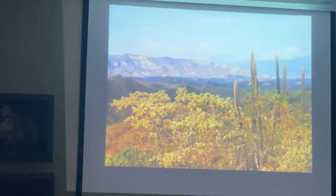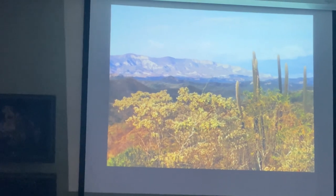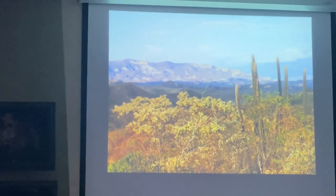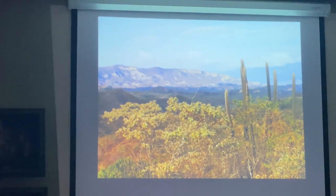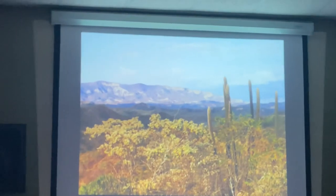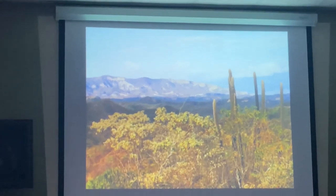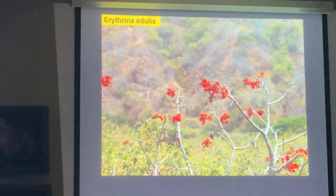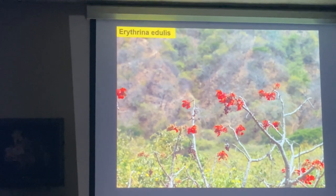Around Chiclayo, you can see there is a deciduous forest, and that's basically what it looks like. There is an Espostoa, which is the columnar cactus with a lateral cephalium, and all those trees are deciduous. So during the dry season they lose their leaves, and then in the rainy season they leaf out.